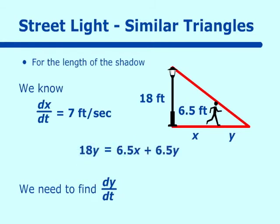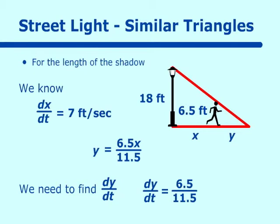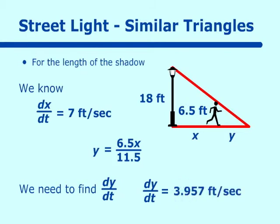Solving for y: 18y = 6.5x + 6.5y, so 11.5y = 6.5x, giving y = 6.5x/11.5. Taking the derivative: dy/dt = (6.5/11.5) dx/dt. We know dx/dt is 7, so filling that in, the answer is approximately 3.957 feet per second.